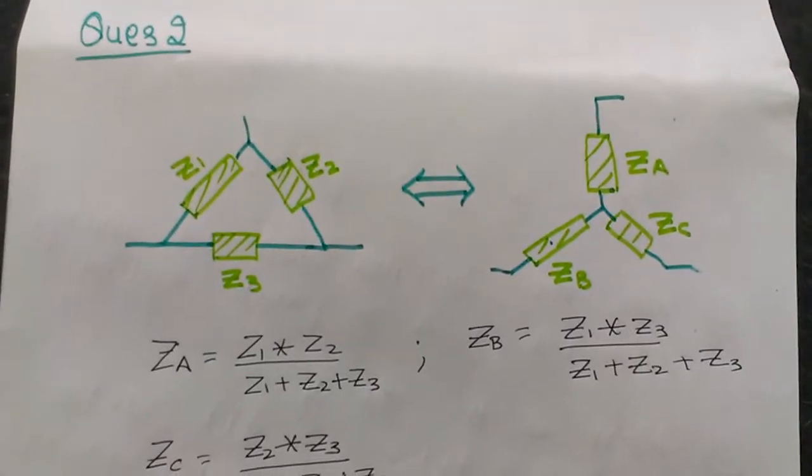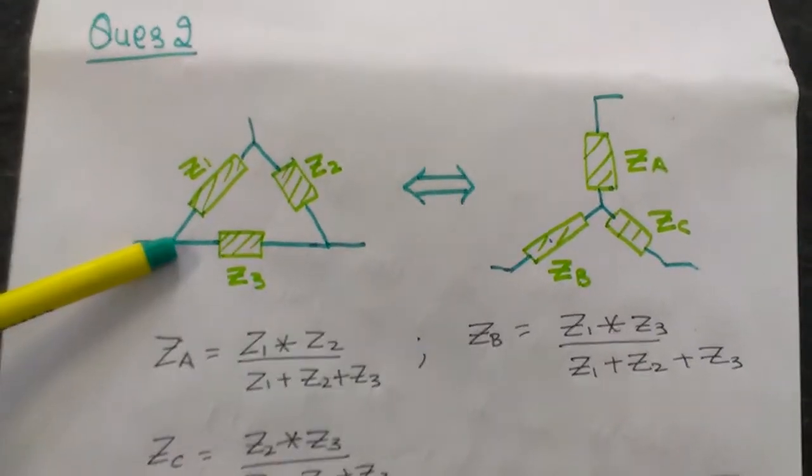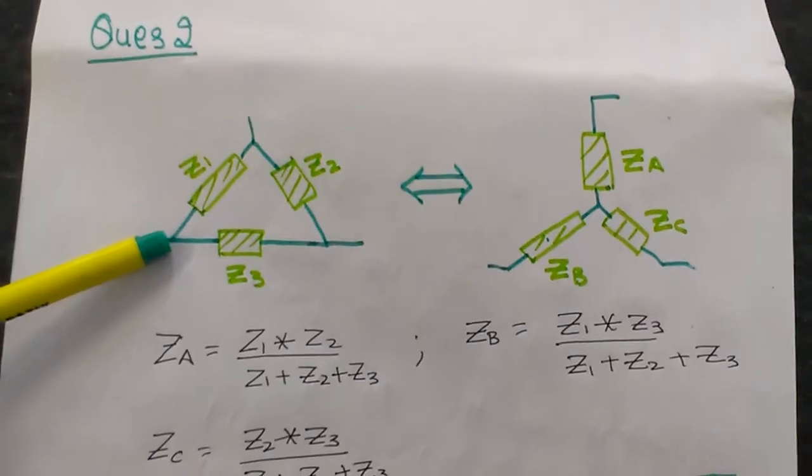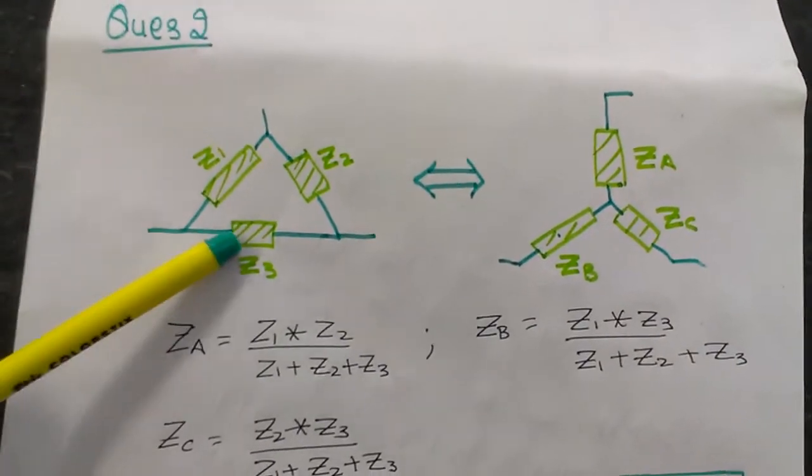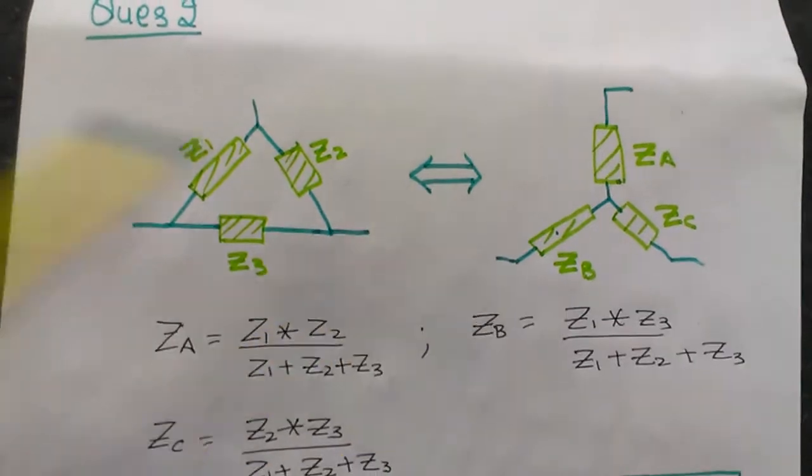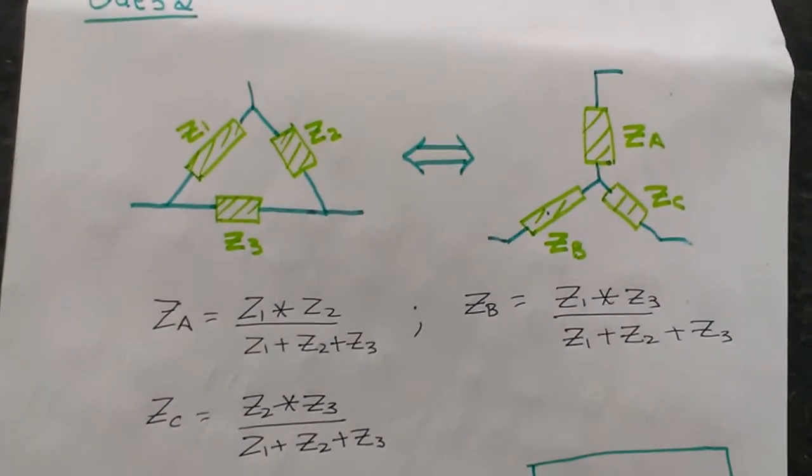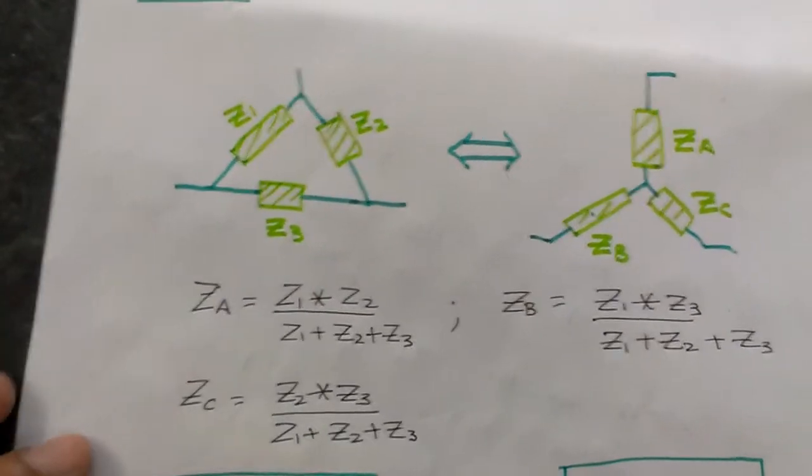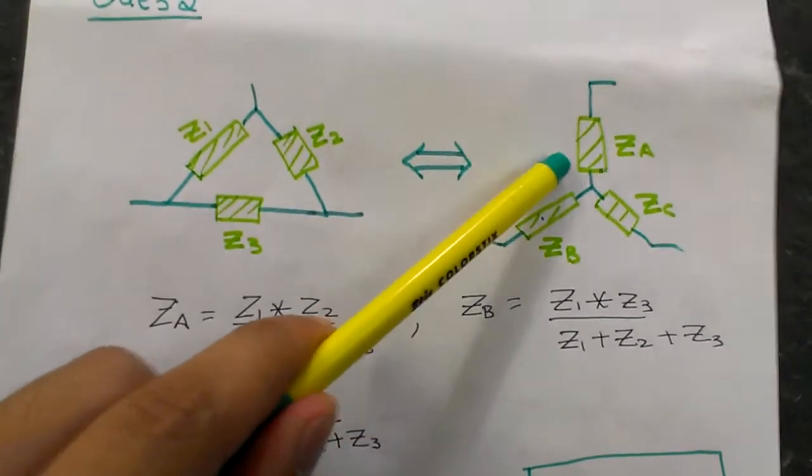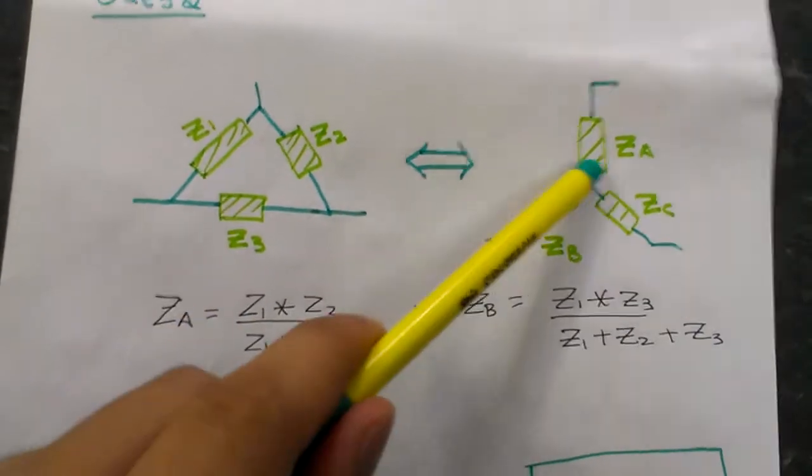First, let's convert the Delta into a star equivalent. I'm not going to do the derivations but just discuss the formulas here. ZA, if you have to calculate ZA, this will be equal to Z1 times Z2 divided by the sum of these three impedances, that will give you ZA.